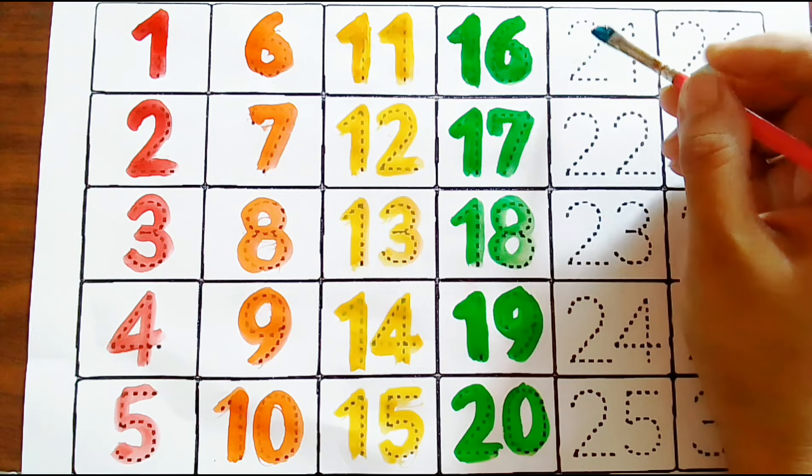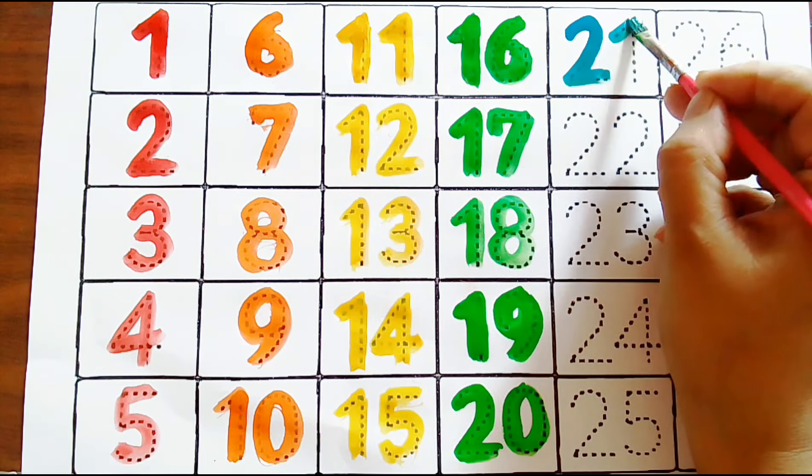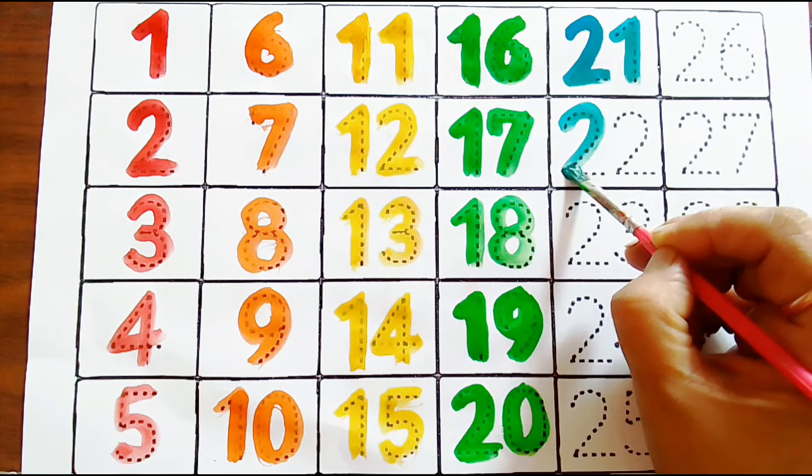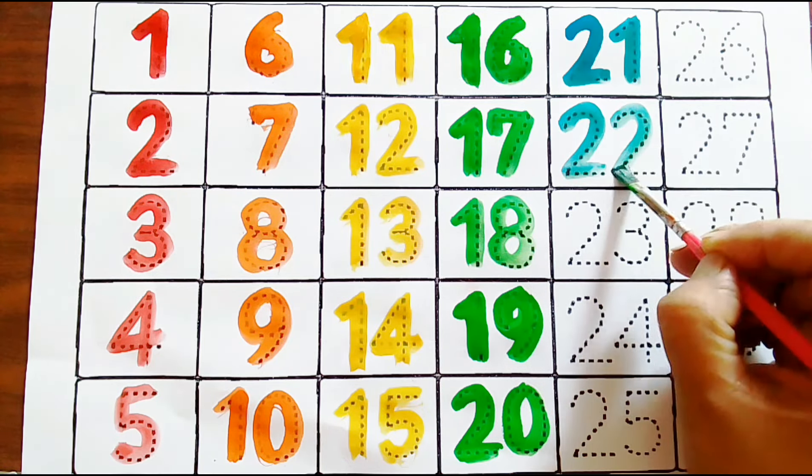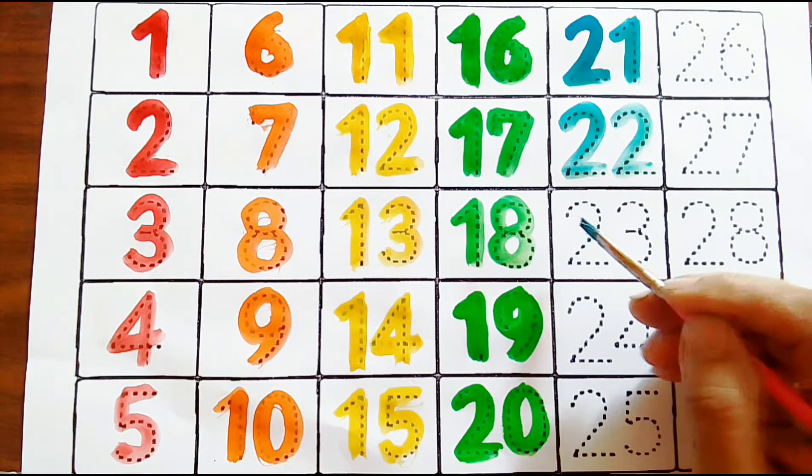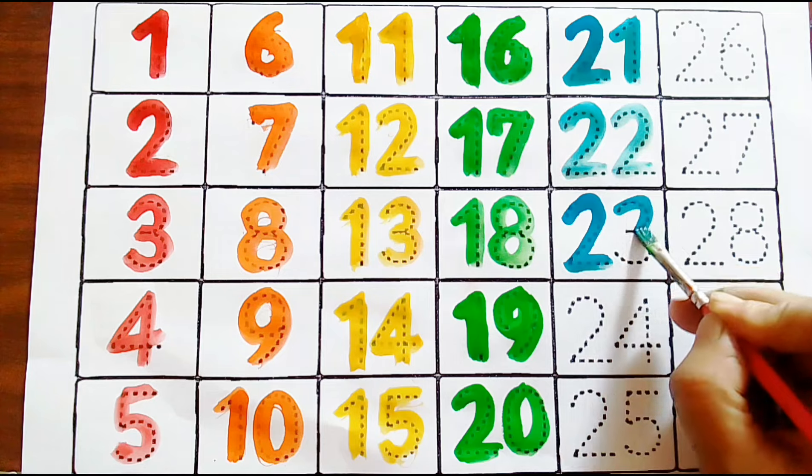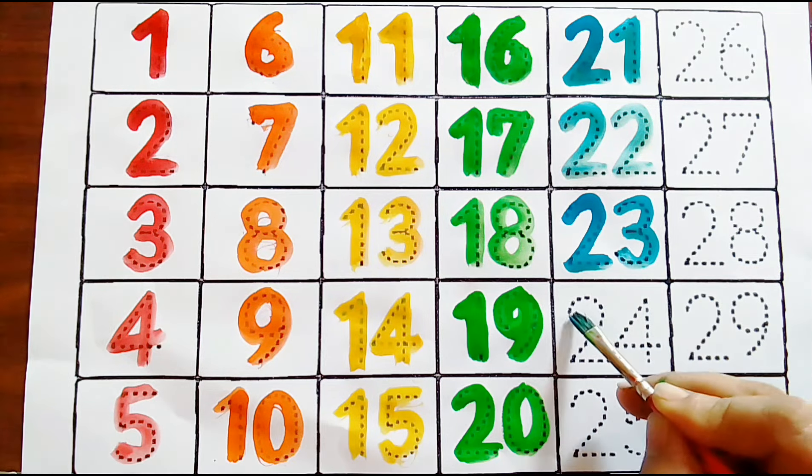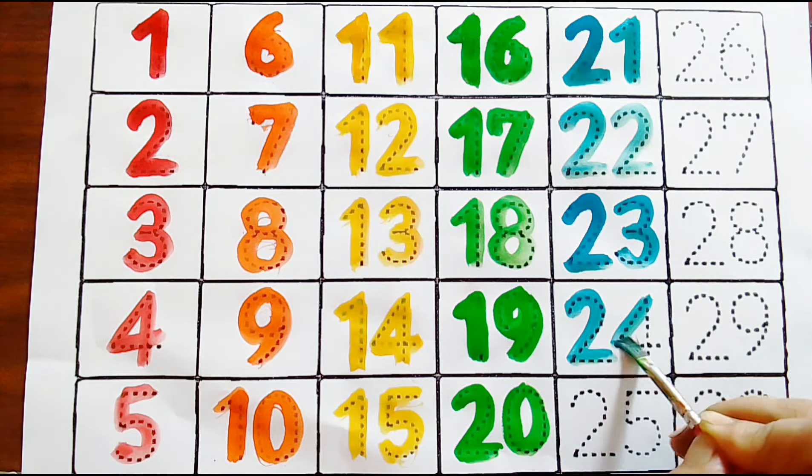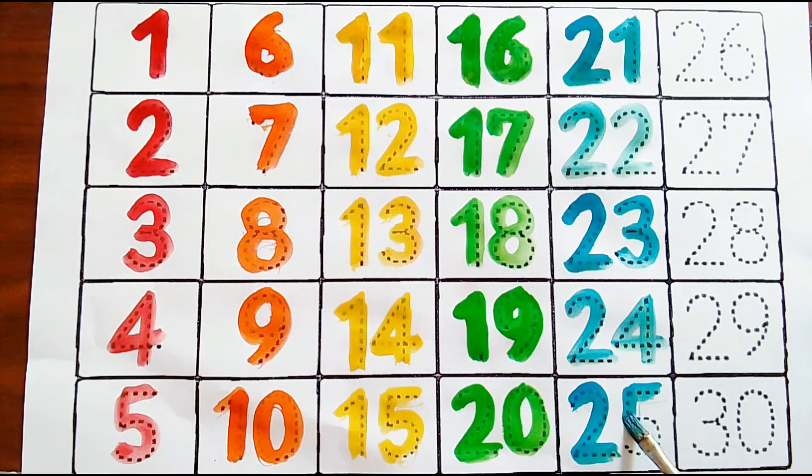Blue color: two one, twenty-one. Two two, twenty-two. Blue color: two three, twenty-three. Two four, twenty-four. Blue color: two five, twenty-five.